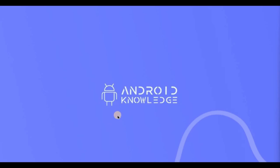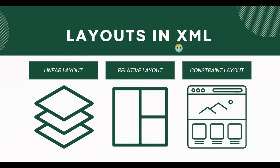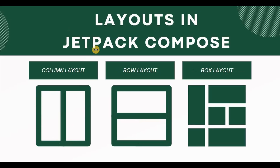Welcome back to the channel. In this video we will learn about ConstraintLayout in Jetpack Compose. As you already know, in XML we have three types of layouts: LinearLayout, RelativeLayout, and ConstraintLayout, of which ConstraintLayout was the most recommended layout. Now in Jetpack Compose, again we have three types of layouts.